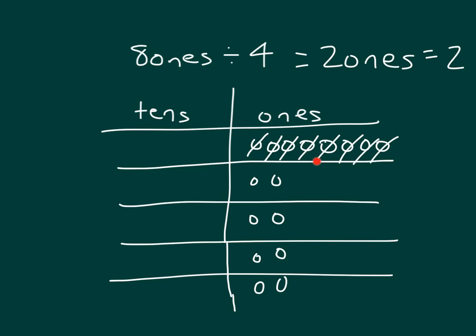So again, we modeled the number first. Since we were dividing by four, we made four groups. And then we started placing those within our place value chart.